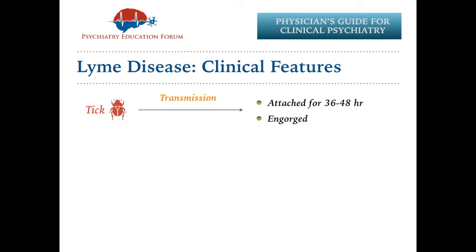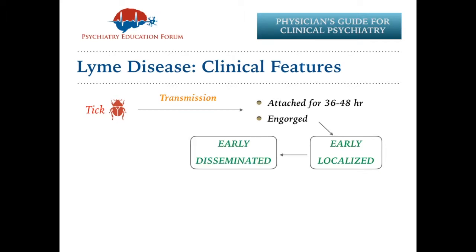Once the tick is there for 36 to 48 hours and the bacterium is transmitted, there are three well-recognized clinical stages of Lyme disease. First is early localized Lyme disease. Second is early disseminated Lyme disease. And last is late Lyme disease. Let's start with early localized Lyme disease.